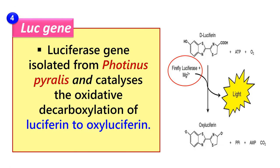Next example is the LUC gene, also called the luciferase gene. It is isolated from the North American firefly Photinus pyralis. It catalyzes the oxidative decarboxylation of luciferin to oxyluciferin in the presence of ATP, oxygen, and magnesium ions. The luminescence in terms of light production can be recorded by using a luminometer. When we use these genes as a reporter gene, there will be production of light which can be measured by the luminometer, ultimately indicating their position.